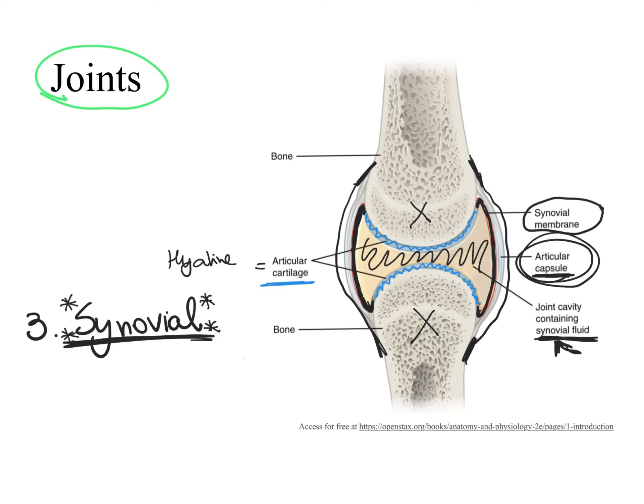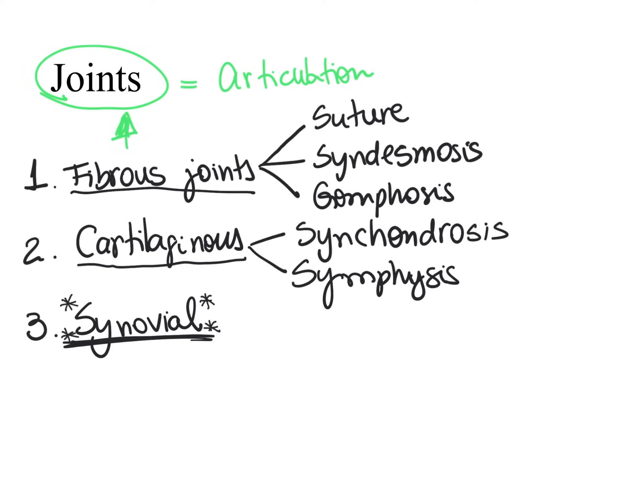We have different types of synovial joints, based on the shape of the articular surfaces of the bones in that specific joint. Some synovial joints are slightly movable, while other synovial joints are extremely movable — in fact, the most mobile joints in our body. There are six different types of synovial joints.